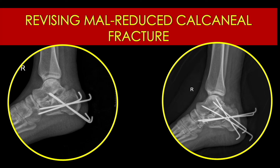Hello friends. In this case I will be talking about revising a mal-reduced intra-articular calcaneal fracture which was fixed with multiple k-wires. It was then revised to a better picture in which the articular reduction was restored along with the angular parameters of the tuberosity with the anterior process. So this was the mal-reduction picture and this was the after-revision picture. We'll be seeing what problems occurred and how it was handled.